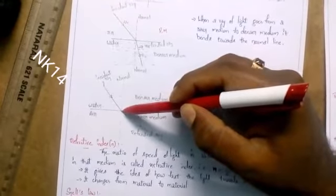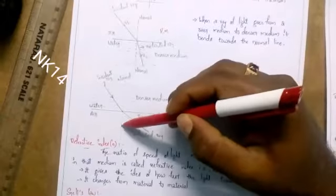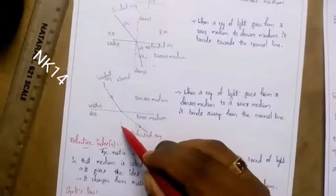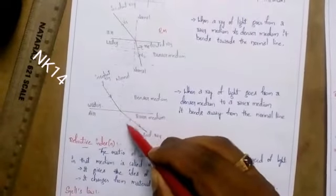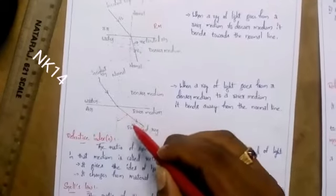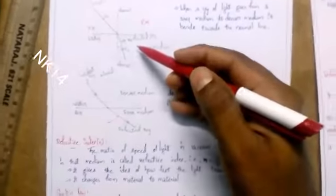When light travels from denser medium to rarer medium, after hitting the interface it travels far away from the normal. The angle is larger in this case. These are the two properties of refraction.